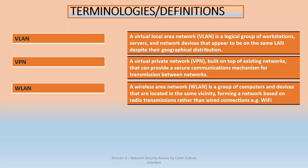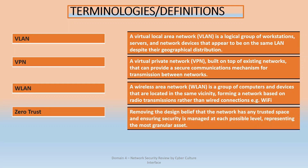A WLAN (Wireless Local Area Network) is a group of computers and devices located in the same vicinity forming a network based on radio transmission rather than wired connections. Basically, a wireless LAN is a LAN made up of Wi-Fi or radio connections — not using cables. Once it's not using cables, it's wireless.